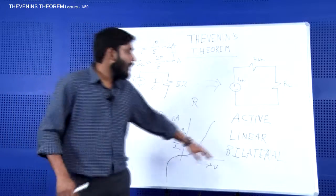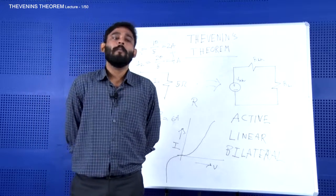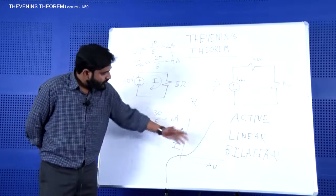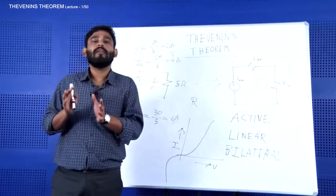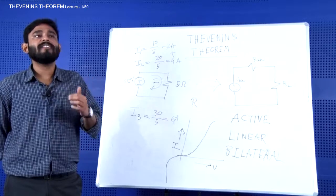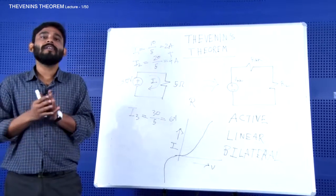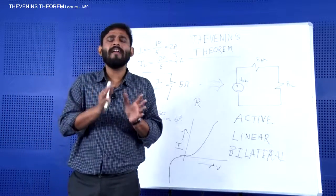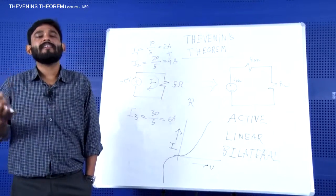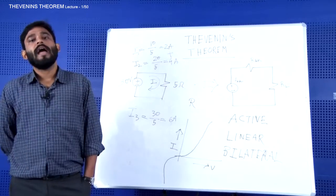A unilateral element, on the other hand, behaves completely differently when the polarity of the applied voltage is changed. The diode is the classic example: when forward biased it acts more or less as a short circuit, but when reverse biased it behaves in a completely different manner, acting like an open circuit. So just by changing the polarity, the whole dynamics of the element change — these are called unilateral elements.